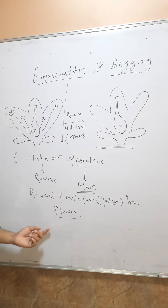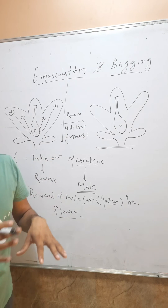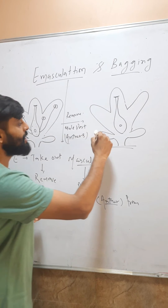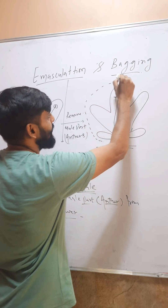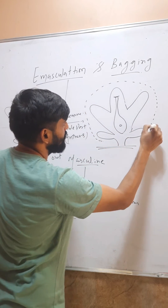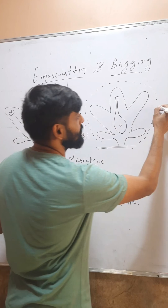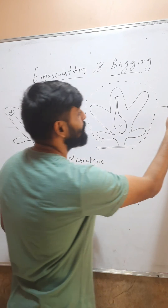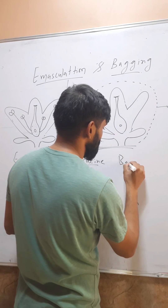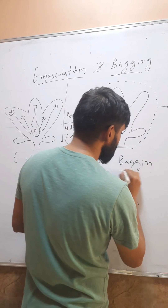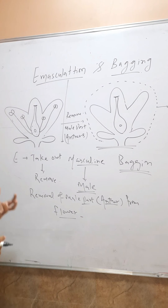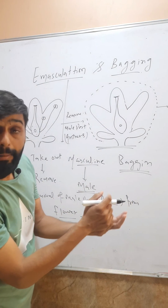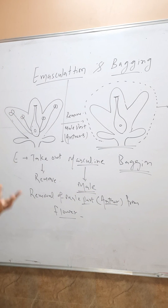This process is called emasculation, and when these male parts are removed, the flower is covered with bags like this. This covering of the flower with polythene bags is called bagging. So emasculation simply means removal of the male part of a flower, and bagging is covering the flower after emasculation.